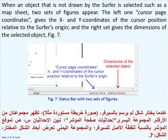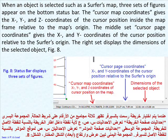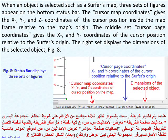When an object that is not drawn by the Surfer is selected, such as a map sheet, two sets of figures appear. The left one, cursor page coordinates, gives the X and Y coordinates of the cursor position relative to the Surfer's origin. And the right set gives the dimensions of the selected object, Figure 7. When an object is selected such as the Surfer's map, three sets of figures appear on the bottom status bar. The cursor map coordinates gives the X, Y, and Z coordinates of the cursor position inside the map relative to the map's origin. The middle set, cursor page coordinates, gives the X and Y coordinates of the cursor position relative to the Surfer's origin. The right set displays the dimensions of the selected object, Figure 8.